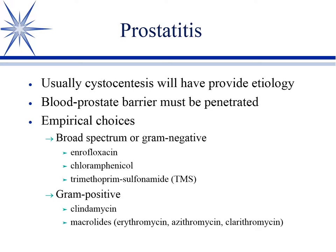For prostatitis, the drug has to penetrate the blood-prostate barrier. You do not need a prostatic biopsy or wash — those are done if concerned about prostatic cancer. If they have prostatitis, they'll also have cystitis, so you can get the etiology from your urine culture. Enrofloxacin is typically our first-line drug for prostatitis in the dog. If resistant, we'll consider chloramphenicol or TMS. Technically, lincosamides and macrolides enter the prostate, but they don't concentrate well in urine and aren't commonly used.